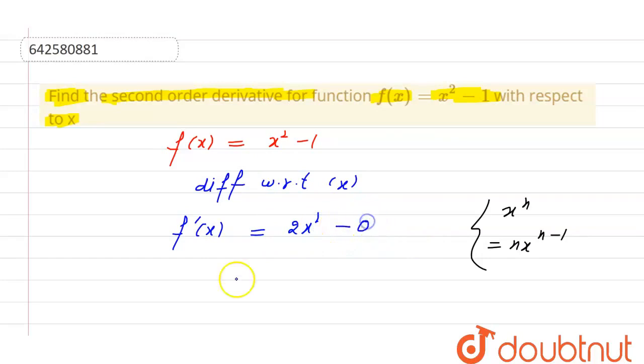And differentiation of constant is equal to 0. So, f dash x is equal to 2x.